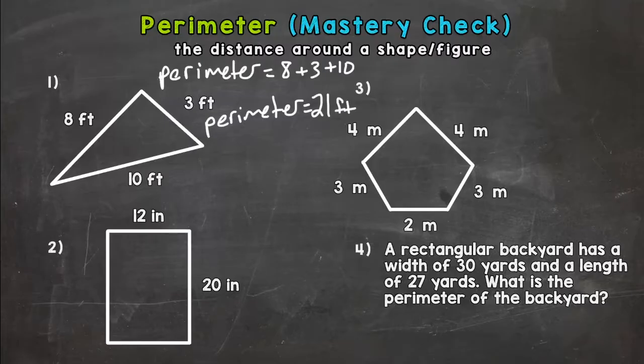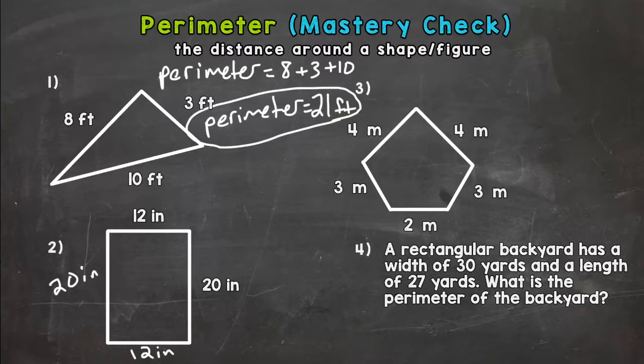Number two, we have a rectangle. Now if you did 12 plus 20, that's only halfway around that rectangle. You need to go all the way around. All four sides need to be included. So I always like to fill in the unknowns. So we have 20 inch, 20 inch, 12 and 12. So anything that isn't marked, you can fill in that way. You make sure you don't forget about it. So our perimeter is going to equal 20 plus 20 plus 12 plus 12.